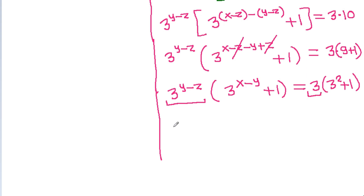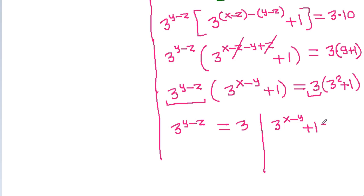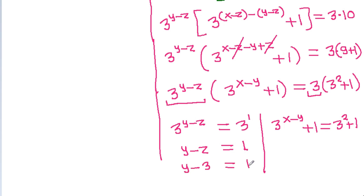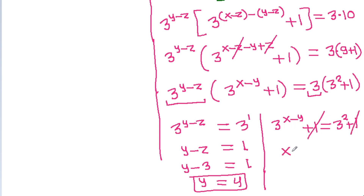So 3 power (y minus g) will be 3, and 3 power (x minus y) plus 1 will equal 3 squared plus 1. Since 3 is the same as 3 power 1, y minus g equals 1, and since g is 3, y will equal 4. The 1s cancel, so x minus y equals 2, and since y is 4, x will equal 6.